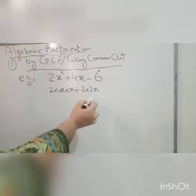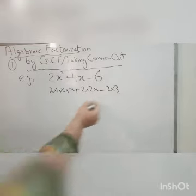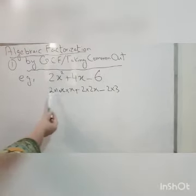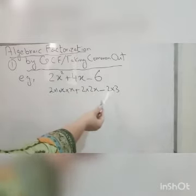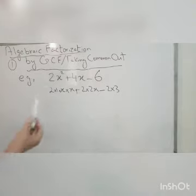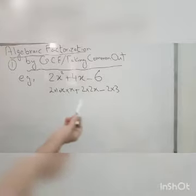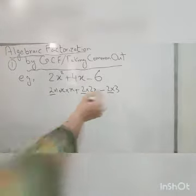So what we did, we basically transform the coefficients into its factors. 4 is converted 2 into 2, 6 is converted into 2 into 3. Now see what is the greatest common factor here, or you can see what's the number which is present in all these terms. Here, if you see, 2 is common in all of them.